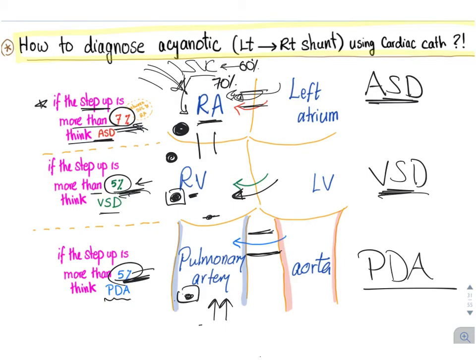Using cardiac catheterization: ASD is diagnosed with a 7% step-up, VSD with 5%, and PDA with 5%.